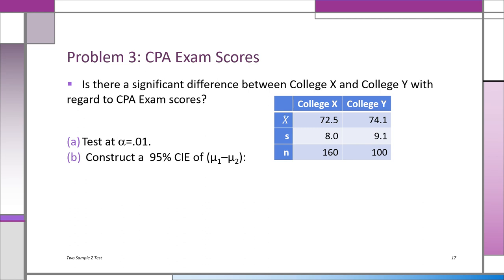Problem three compares two colleges on CPA exam scores. We took 160 students from College X (mean=72.5, SD=8.0) and 100 from College Y (mean=74.1, SD=9.1). There's a slight 1.6-point difference. Testing at alpha = 0.01, we set up H0: mu1 = mu2; H1: mu1 ≠ mu2. We split the 0.01 alpha into two tails of 0.005 each, giving critical values of ±2.575.